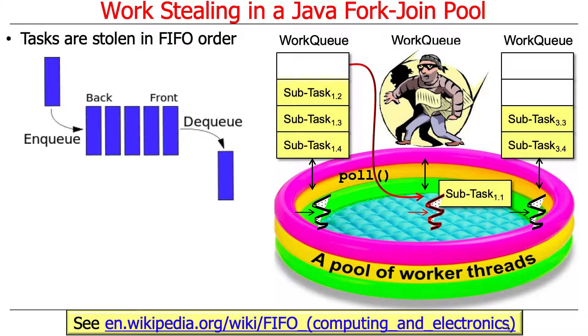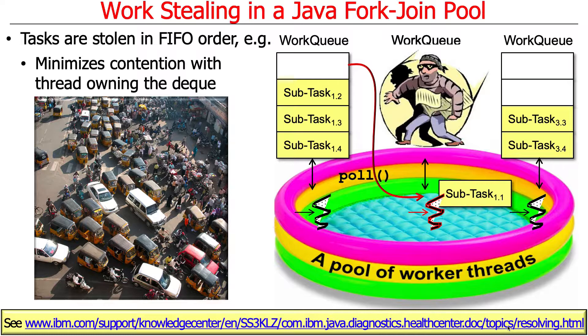Things that are put on first will be stolen first — stolen in FIFO order — whereas things that are pushed and popped by the owning thread will be in LIFO order. The reason for doing this is to minimize contention with the worker thread that owns the deck, because that thread will be pushing and popping to the front of the deck, while another thread pulls things off the end. If the queue has more than one element, there's actually no contention at all, because the front and end of the deck are protected by two different sets of locking mechanisms.